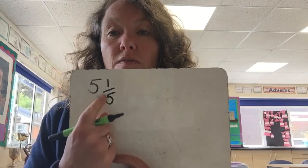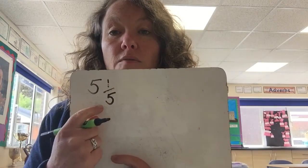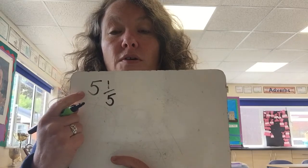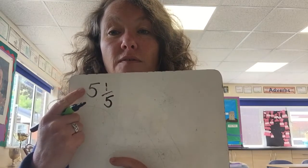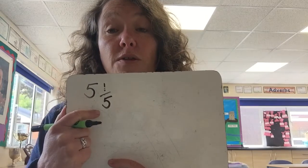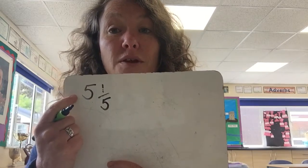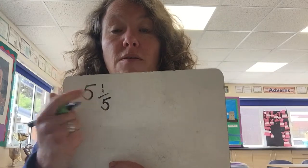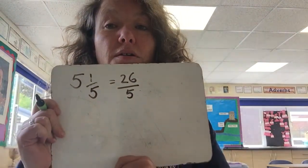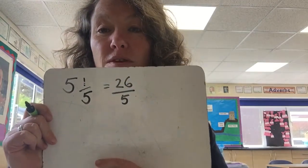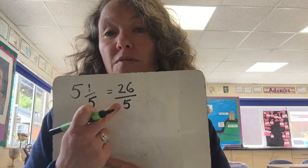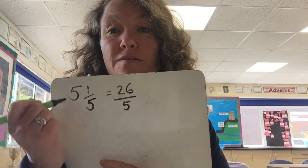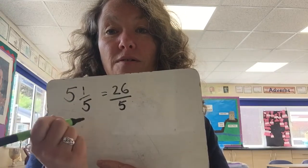Now we're looking at the denominators — it's really important. We start with five and one-fifth. We're dealing with fifths and we've got five whole ones, so the first thing we do is five times five, which gives us 25. So in five whole ones we've got 25 fifths, and then we've got one extra, so it's 25 plus one which makes 26. The answer is 26 fifths. If you're not sure, you can check: fives into 26 goes five remainder one — so we've got the right answer.